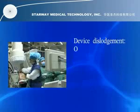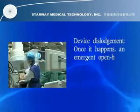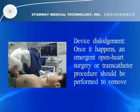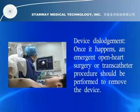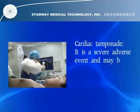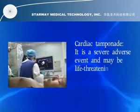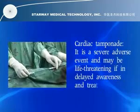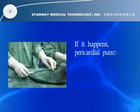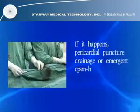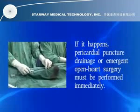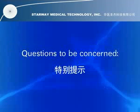Device dislodgement: Once it happens, emergent open heart surgery or a transcatheter procedure should be performed to remove the device. Cardiac tamponade is a severe adverse event and may be life-threatening if awareness and treatment are delayed. If it happens, pericardial puncture drainage or emergent open heart surgery must be performed immediately.